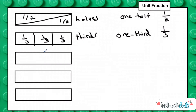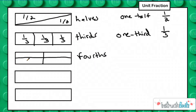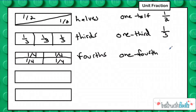The next one we typically work with is fourths. You can make fourths different ways as long as they're equal parts. If you split a whole into four equal pieces, we call that fourths, and each piece is going to be worth one fourth. My unit fraction is one fourth, and I write that as a fraction one out of four pieces. That's just another way to represent a fraction, but it means the same thing — one out of four pieces.